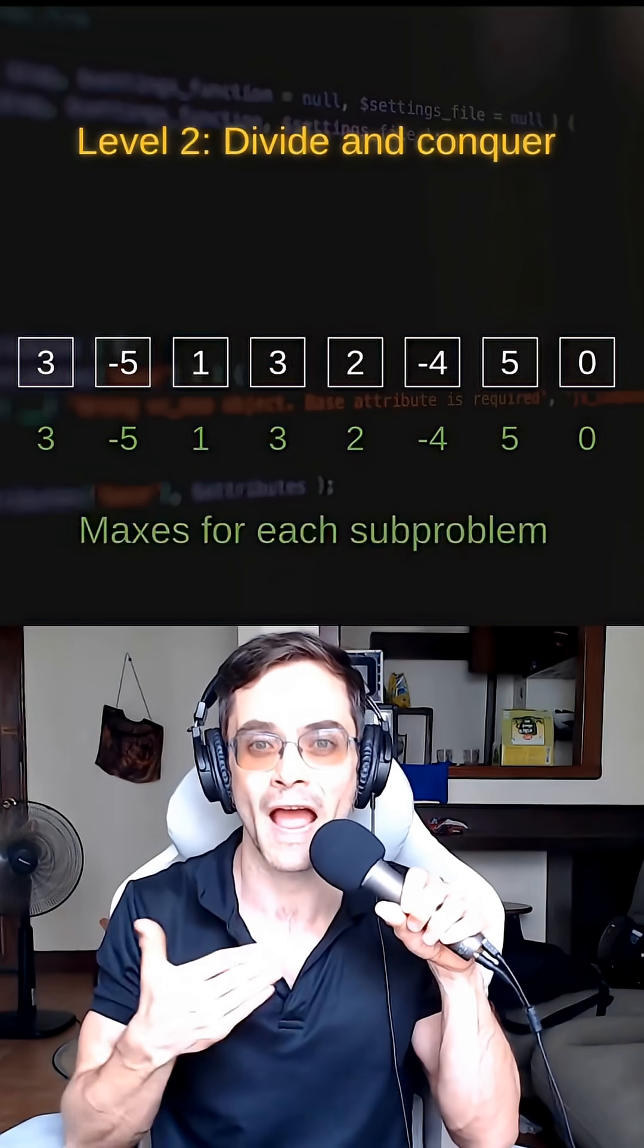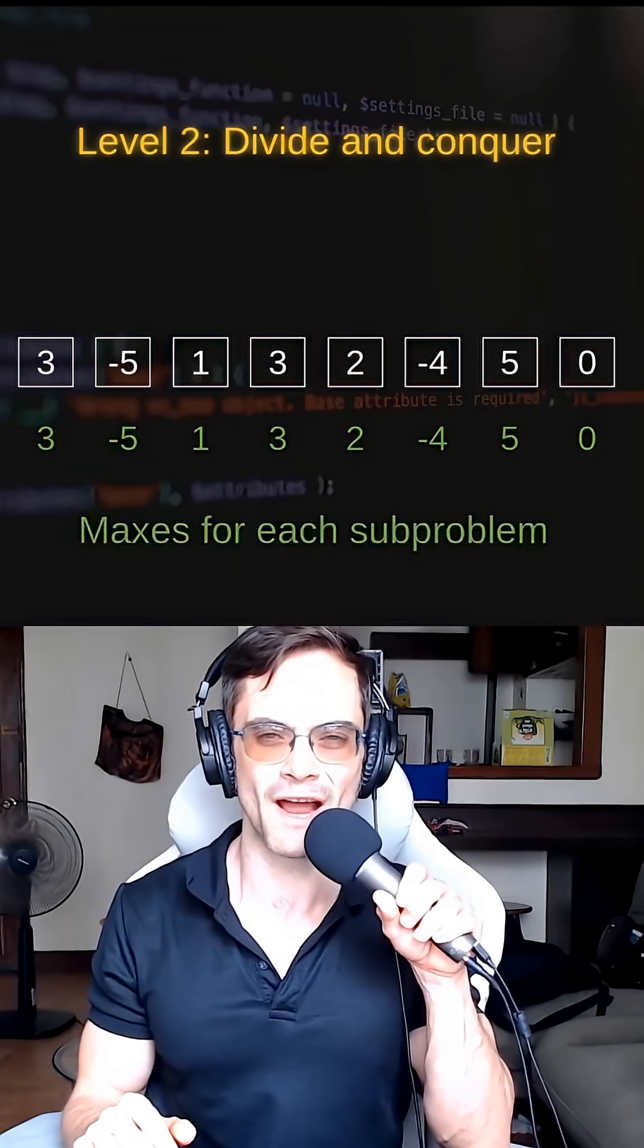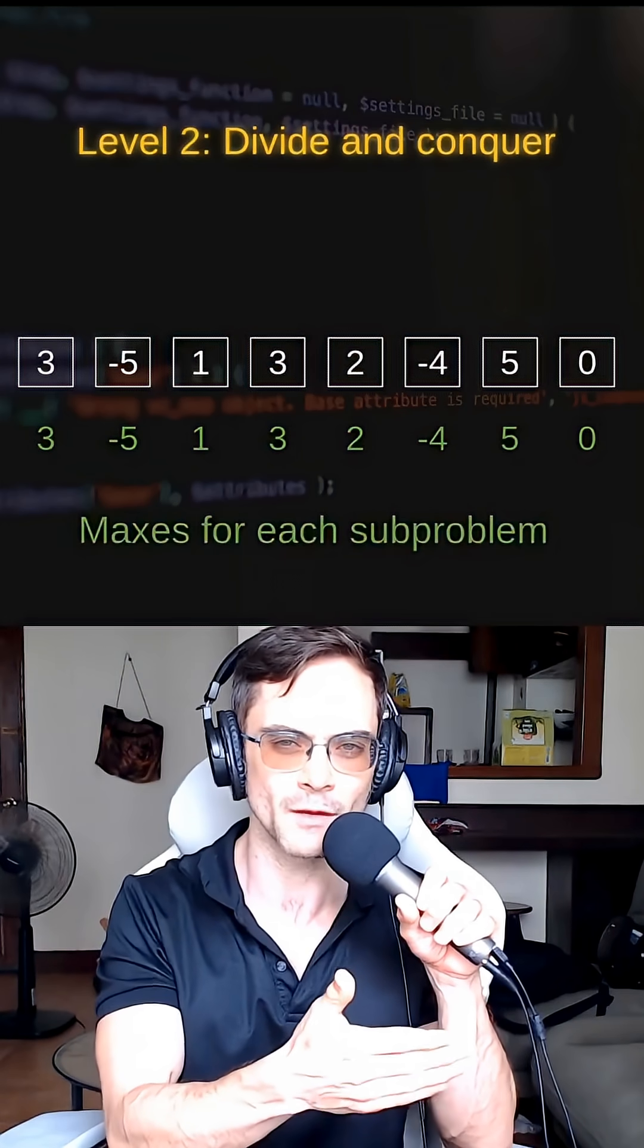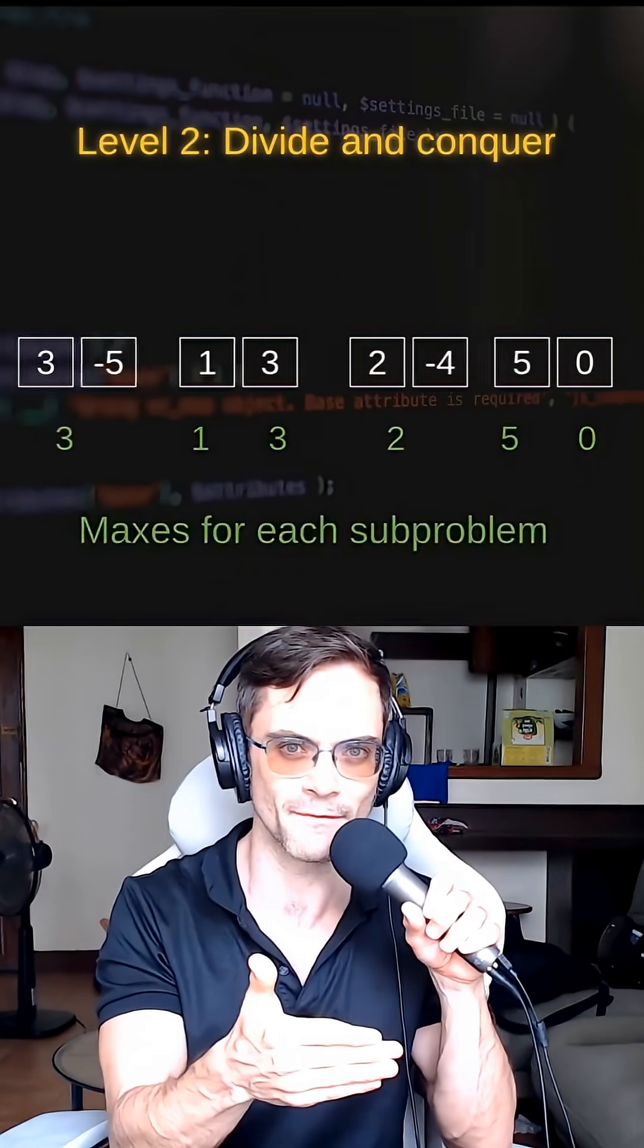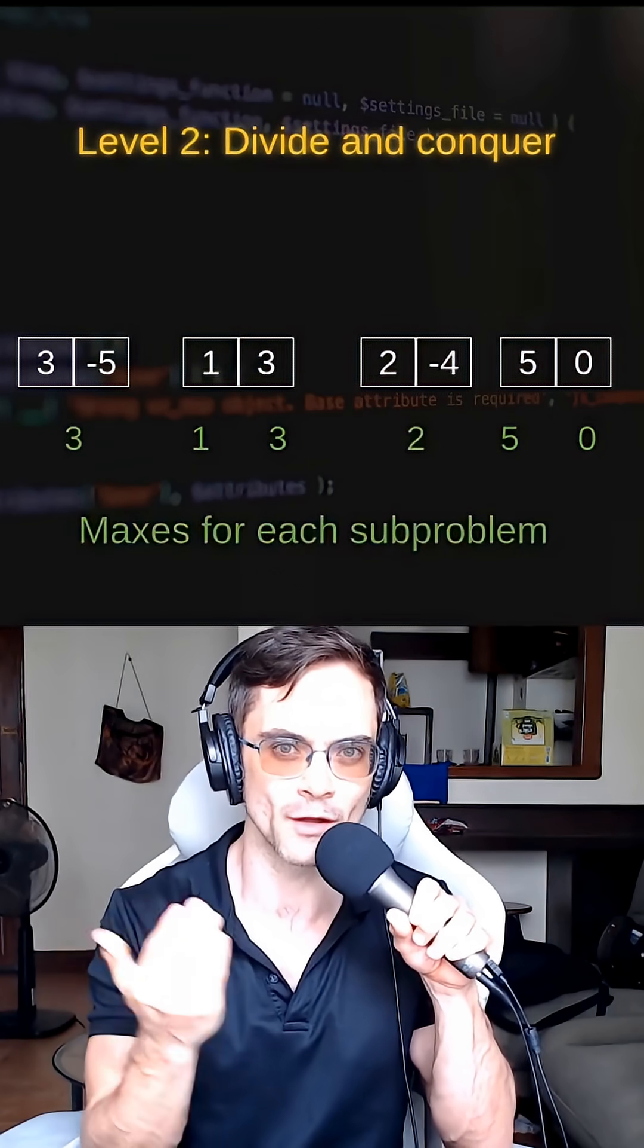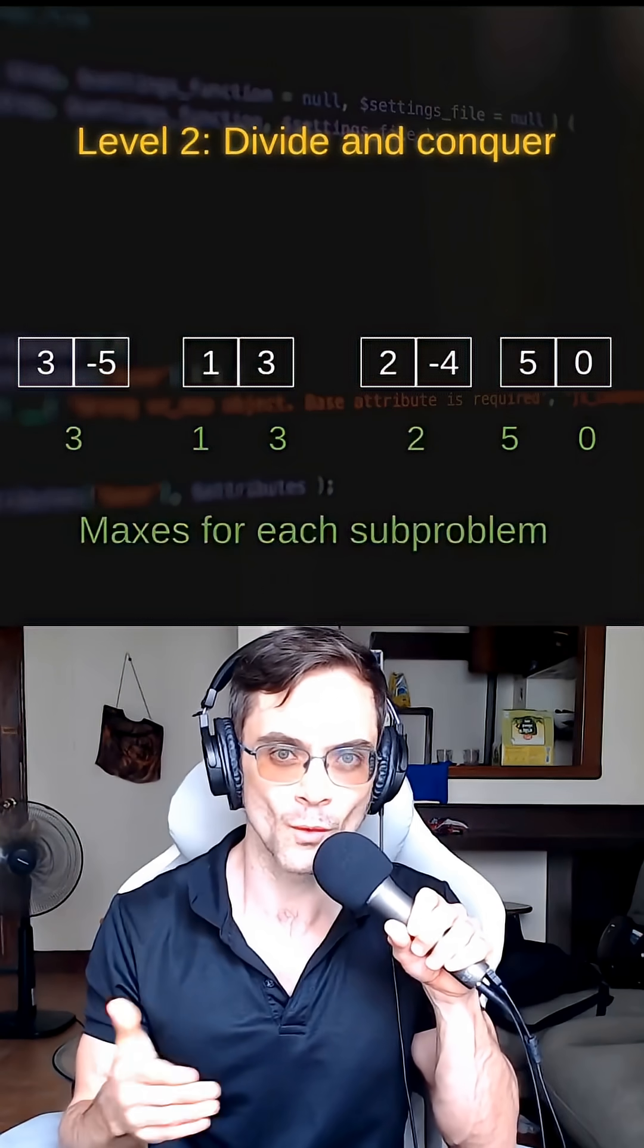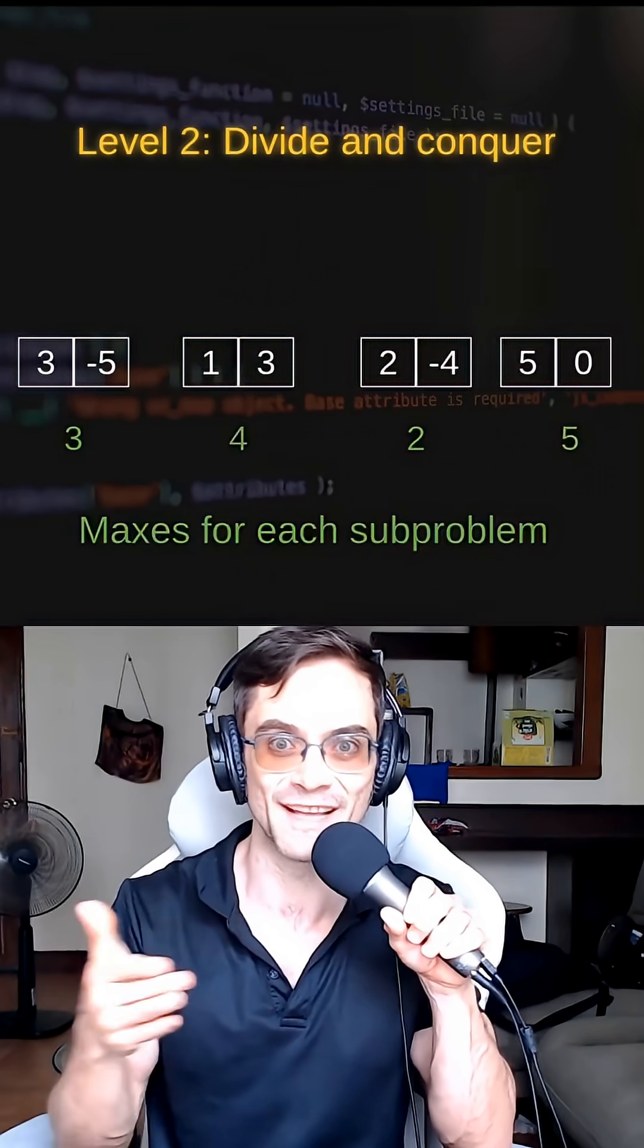it's quite easy to understand how we might combine them. The max is either going to be the left item, as you can see with 3 versus -5, or 2 versus -4, or it's the right max, or it's adding two items together, as you can see here with 1 and 3, or 5 and 0.